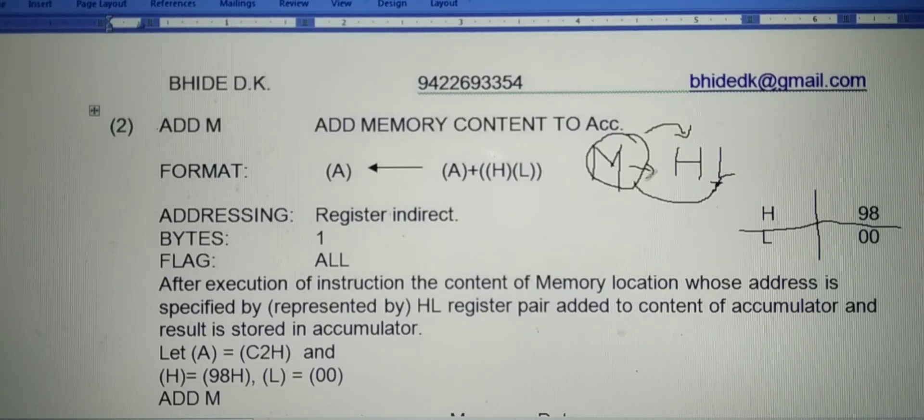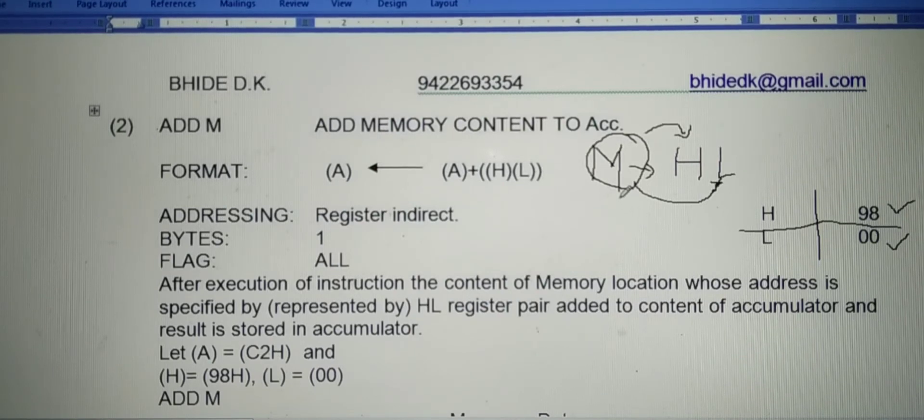For example, in this example, suppose in register H number 98 is there and in register L number 00 is there. That means the memory location is equal to 9800, represented by the number present in HL register pair.